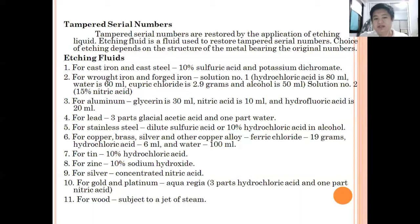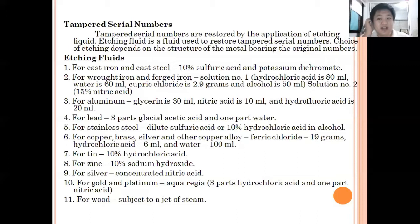For stainless steel, dilute sulfuric acid or 10 percent hydrochloric acid in alcohol is used. For copper, brass, silver, and other copper alloys: ferric chloride 19 grams, hydrochloric acid 6 ml, and water 10 ml, plus 14 percent hydrochloric acid. For zinc: 10 percent sodium hydroxide. For silver: concentrated nitric acid. For gold and platinum: aqua regia, which comprises three parts hydrochloric acid and one part nitric acid. For wood, a jet of steam or motor pressure is sufficient to restore the serial numbers.